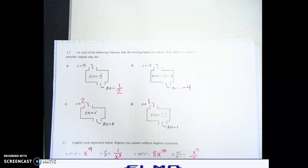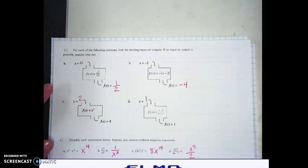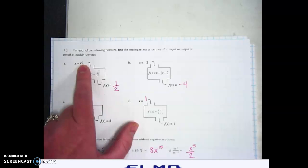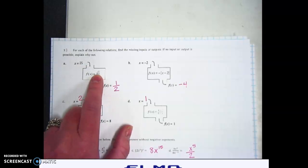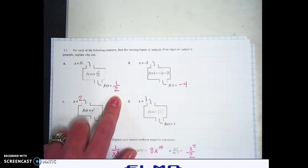Turn over to the top of page 2. For each of the following relations, find the missing inputs and outputs. If no input or output is possible, then explain why not. If we plug in a 25, the square root of 25 is 5. 5 over 10 reduces to 1 half.